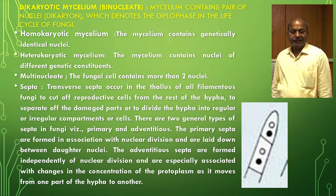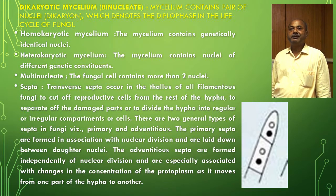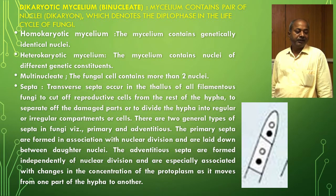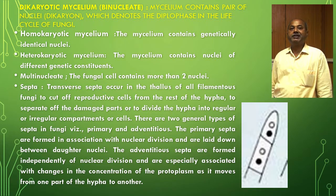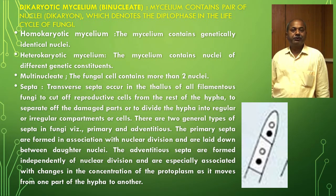When the mycelium contains genetically identical nuclei, it is called homokaryotic mycelium. When the mycelium contains nuclei of different genetic constituents, it is called heterokaryotic mycelium. In multinucleate fungi, the fungal cells contain more than two nuclei.